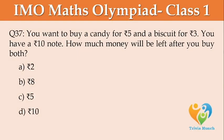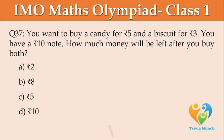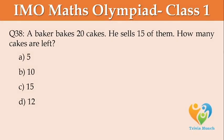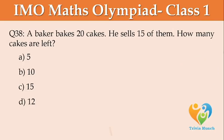You want to buy a candy for Rs. 5 and a biscuit for Rs. 3. You have a Rs. 10 note. How much money will be left after you buy both? Option A: Rs. 2, Option B: Rs. 8, Option C: Rs. 5, Option D: Rs. 10. A baker bakes 20 cakes and sells 15 of them. How many cakes are left? Option A: 5, Option B: 10, Option C: 15, Option D: 12.